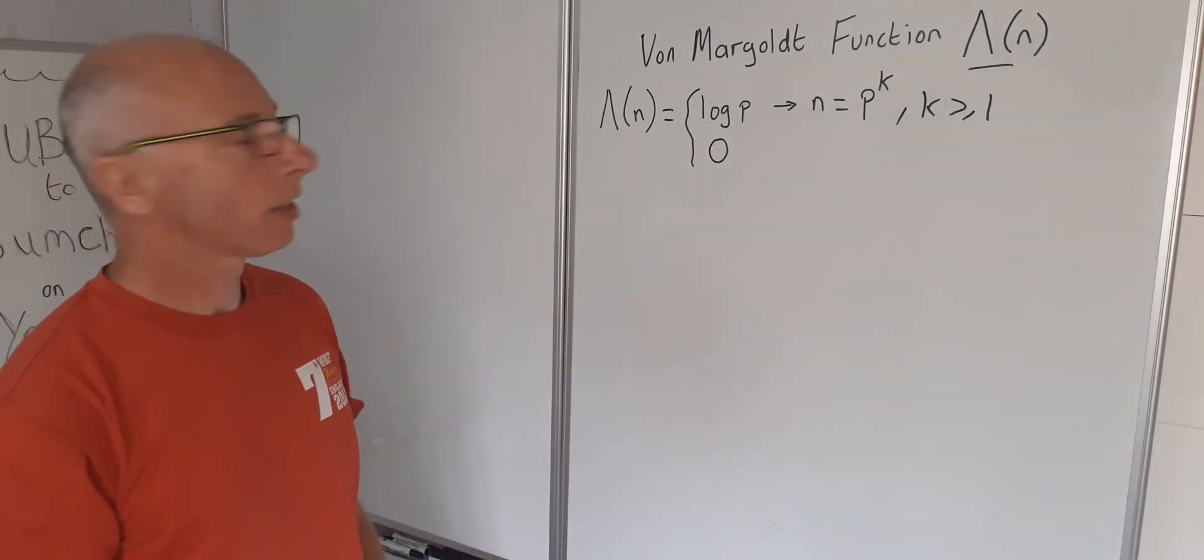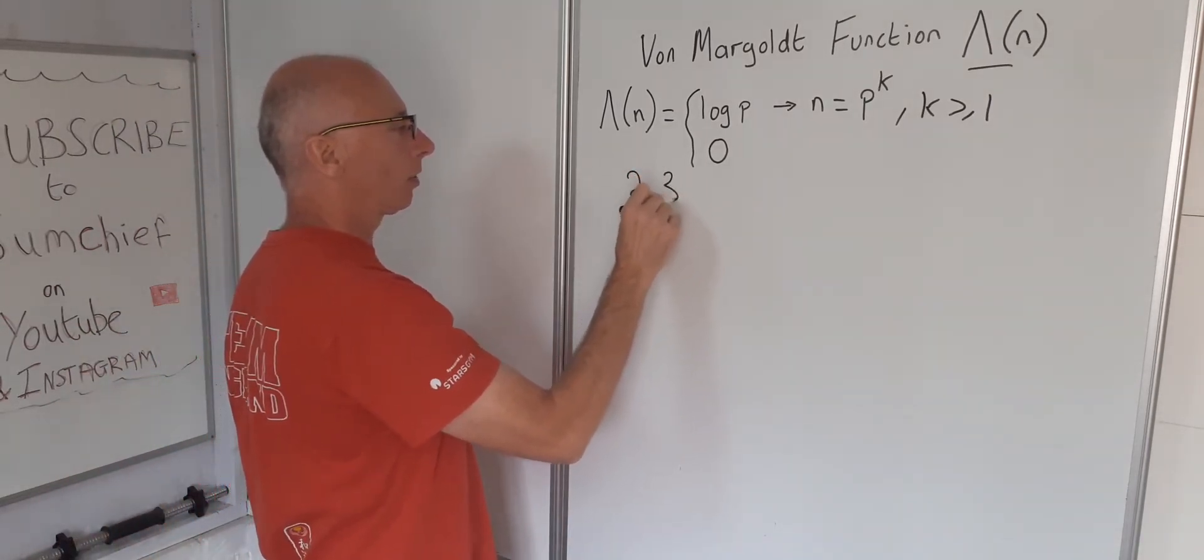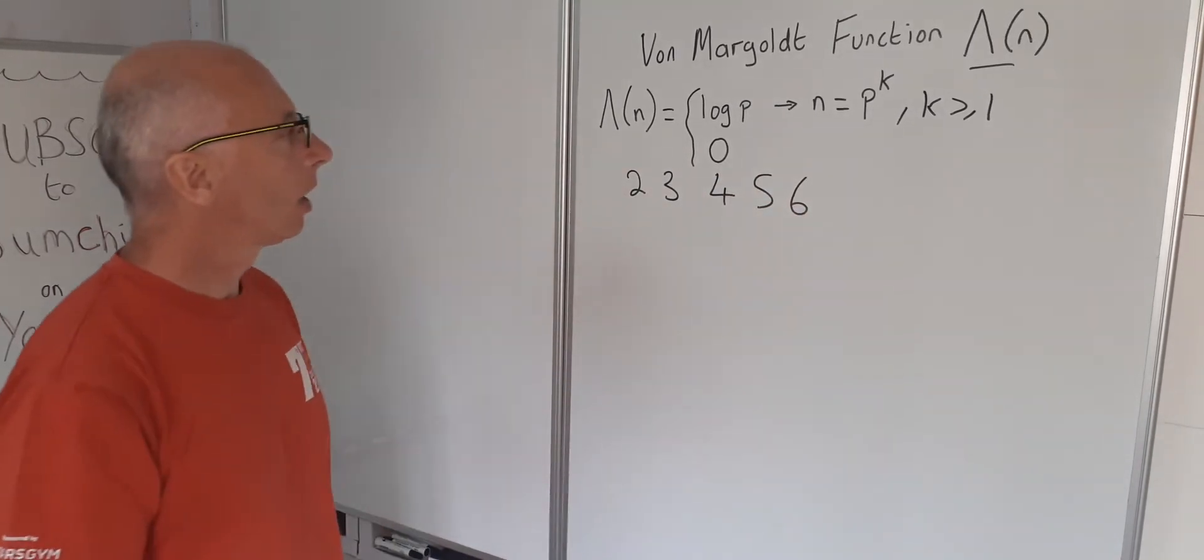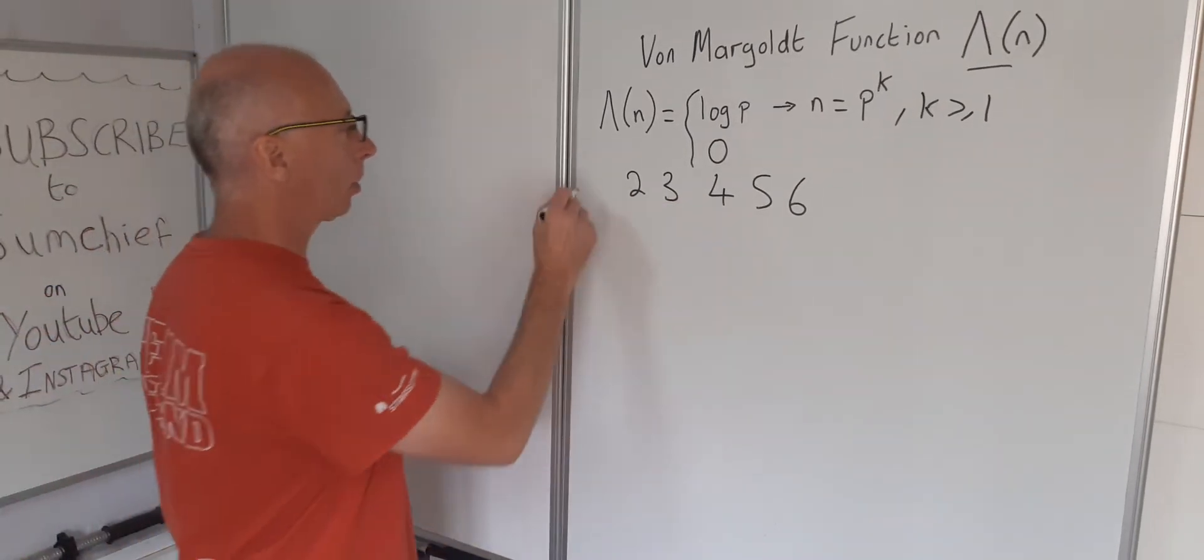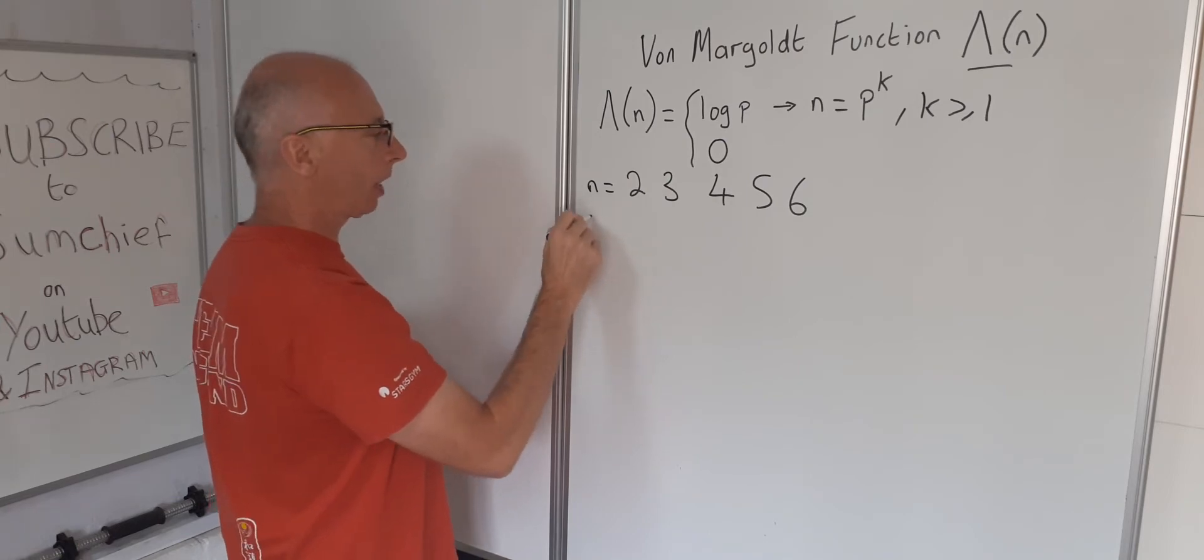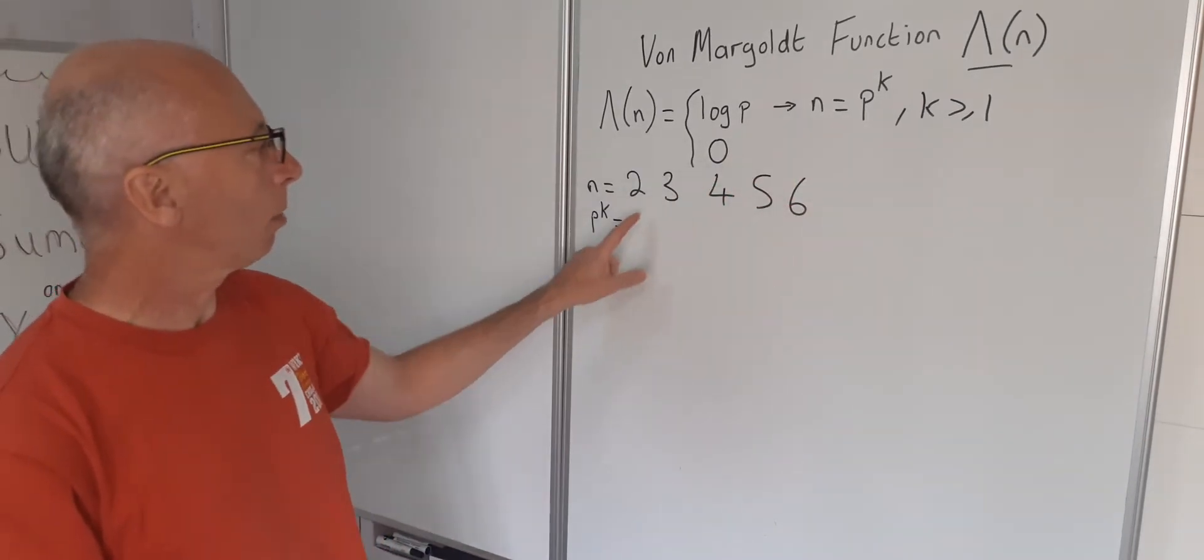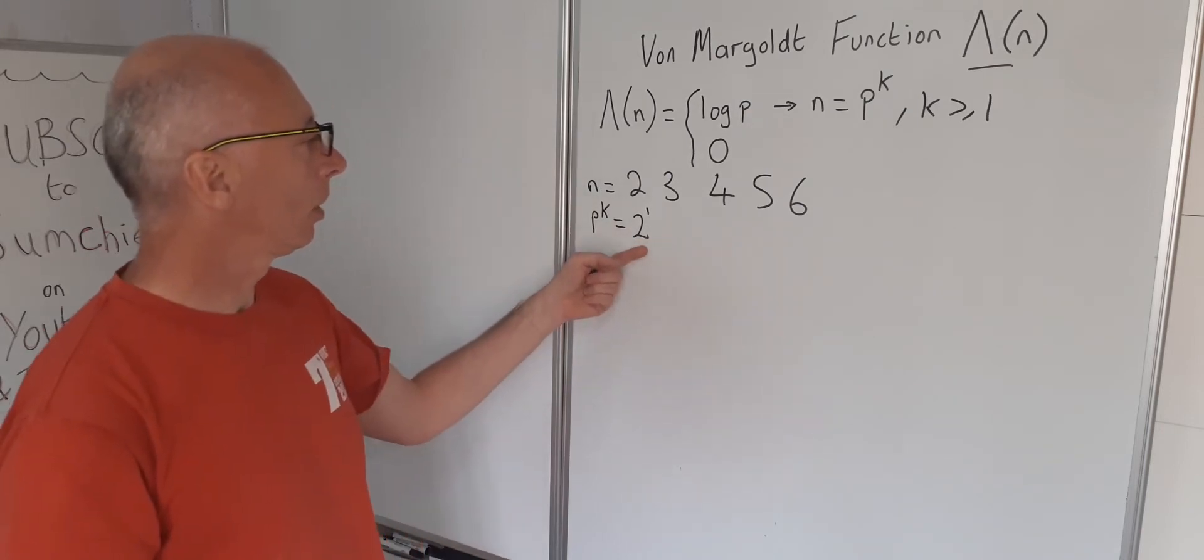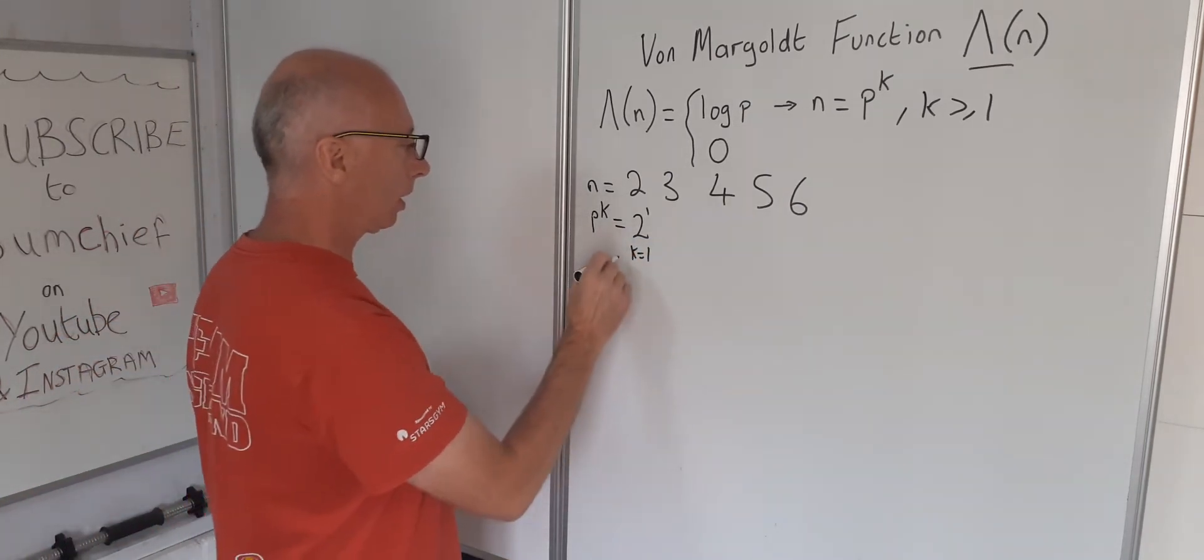So we're going to look at some values for this. So let's take two, three, four, five, six for now. Okay, two. Can we get this two here? So let's put n equals two and then we put here P to the K. So two can be made up of a prime number two to the power of one. So K will equal one, so K equals one and P equals two.